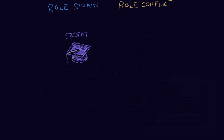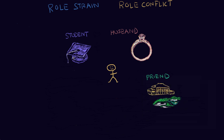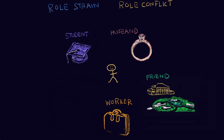Let's take a look at this guy right here and look at a few different scenarios to understand role conflict. This man has many different statuses: he's a student, he's a husband, he's a friend, he's a worker, and he's also a parent.